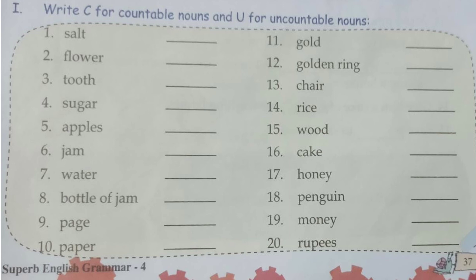Now write C for countable nouns and U for uncountable nouns. Can you count salt? No, we cannot count salt — that is why we use 'a pinch of salt,' 'a spoon of salt,' 'a tablespoon of salt.' Salt is uncountable, so we write U.